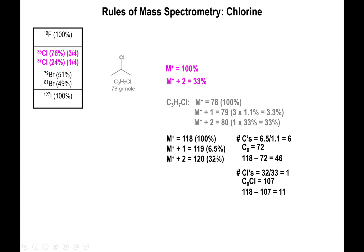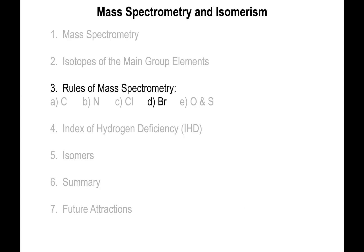That's where the M+2 peak comes in. The value is 32%, and for chlorine you expect multiples of 33%. Dividing 32 by 33 gives roughly 1, so there is one chlorine present. Six carbons and one chlorine account for a total mass of 107. Subtracting from 118 gives 11 hydrogens. Checking: for six carbons, maximum is 2×6+2 = 14 hydrogens, and 11 is below 14 — so the formula checks out.